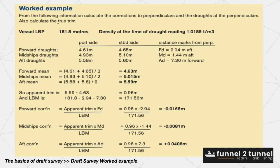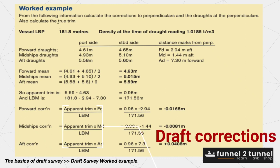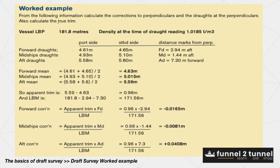We need to apply a correction to these mean drafts in order to obtain the drafts at perpendiculars. The correction is calculated as: apparent trim multiplied by the distance of the draft mark from the perpendicular, divided by the length between marks (length between forward and aft perpendiculars). For example, for the forward draft correction we multiply apparent trim 0.96 m by the distance of the forward draft mark from the perpendicular 2.94 m, and divide by the length between marks 171.56 m. This way we obtain corrections for all three draft marks — forward, midship, and aft — and apply them to get the corrected drafts at perpendiculars.